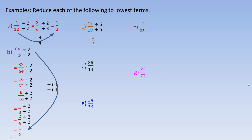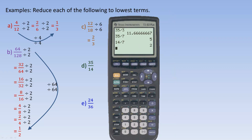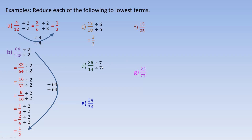For 35/14, they're not both even so 2 won't work. Checking with a calculator, 35 doesn't divide by 3, but 35 does divide evenly by 7, and so does 14. So 35 divided by 7 is 5, and 14 divided by 7 is 2 — reducing to 5/2.